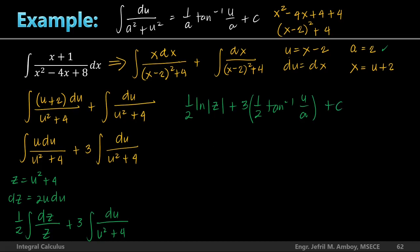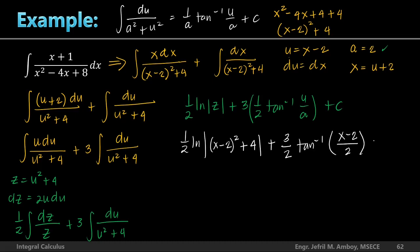Substituting back: z = u²+4 = (x−2)²+4 and u = x−2. The final answer is (1/2) ln|(x−2)²+4| plus 3 times (1/2) tan⁻¹((x−2)/2) plus C, which simplifies to (1/2) ln|(x−2)²+4| + (3/2) tan⁻¹((x−2)/2) + C. Although this looked difficult, the previously learned techniques all applied here.